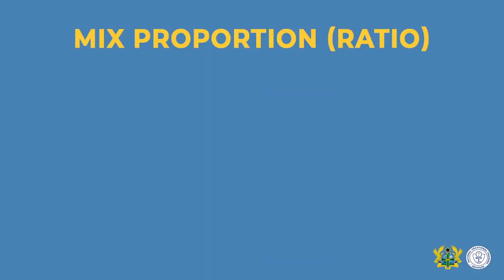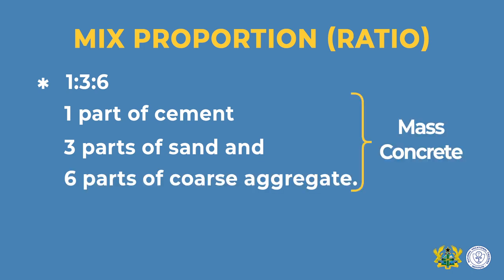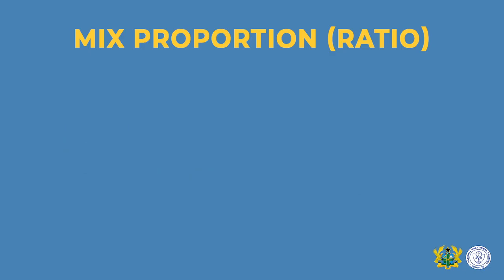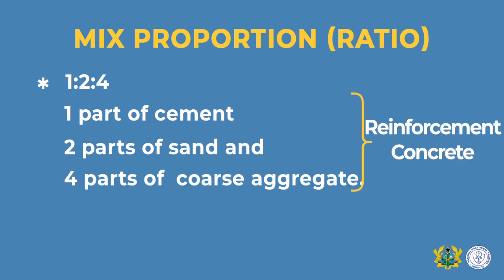Let's look at the mixed proportions. We have two major mixed proportions in concrete production. One is 1:3:6, which means one part of cement, three parts of sand, and six parts of stone. Then we also have reinforcement concrete, which is 1:2:4, meaning one part of cement, two parts of sand, and four parts of stone.